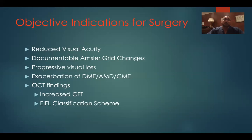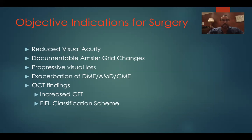As opposed to the subjective indications, the objective indications for surgery include: reduced visual acuity, documentable Amsler grid changes that correlate with the metamorphopsia — and to me that's more important than visual acuity. There are some patients who have a 20/25 membrane with severe metamorphopsia, and those are some of the happiest patients postoperatively. So visual acuity is important, but metamorphopsia is more important. Progression of visual loss is also an indication if you can document it. Exacerbation of concomitant conditions such as diabetic macular edema, age-related macular degeneration, or cystoid macular edema. And then the OCT findings, specifically increased central foveal thickness, or the ectopic inner foveal layer classification scheme findings.